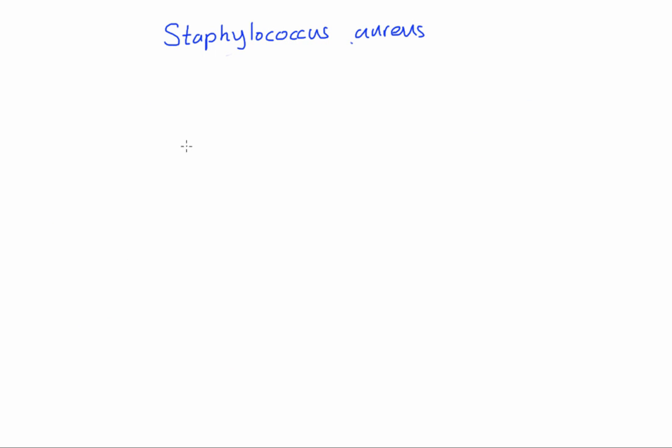Let's talk about Staphylococcus aureus and go through the diagnostic tests. Say we have a sputum sample and need to identify whether it's Staph aureus. First, we do the Gram stain, and you're going to see Gram-positive (blue) cocci arranged in clusters.